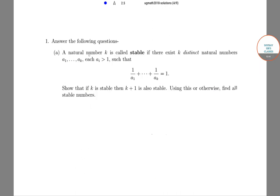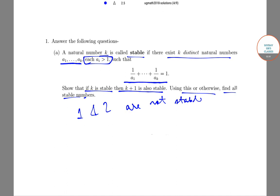The next question is: a natural number k is called stable if there exist k distinct natural numbers. Show that if k is stable then k+1 is also stable. Using this or otherwise, find all stable numbers.